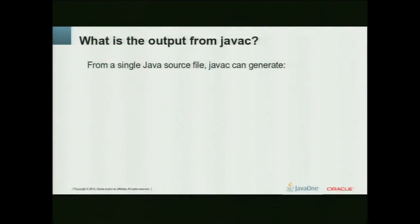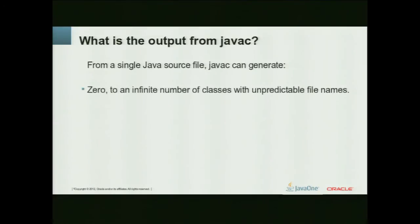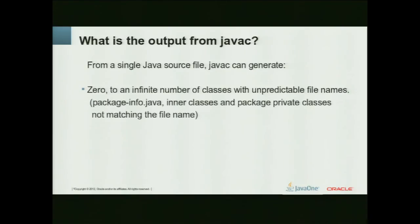We'll start with an easy question. From a single Java source file, what do you get when you compile something? Sounds simple, doesn't it? But in fact it's quite complicated, because you can get anything from zero to an infinite number of classes. And they might not even correlate with the file name of your source file. And this is unfortunately perfectly according to the standard.